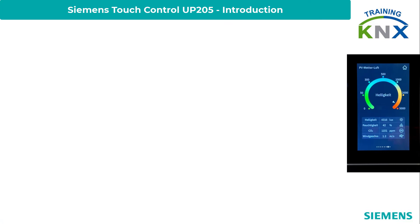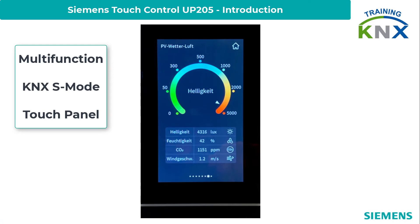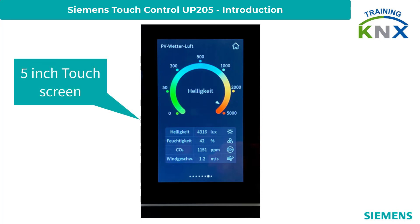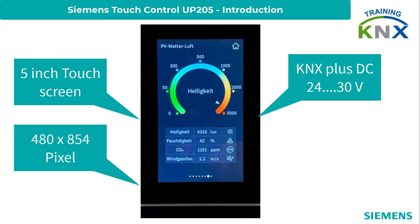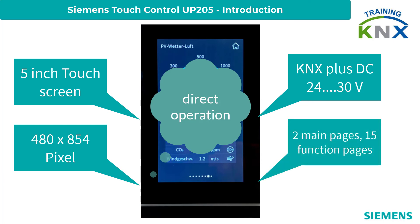The Touch Control TC5, referred to as TC5 in the following, is a multifunction KNX S-Mode touch panel for display, operation, and control. The device has a capacitive color touch screen of 5 inches with a resolution of 480 by 854 pixels. It is supplied via KNX together with an auxiliary voltage of 24 to 30 volt DC, and is operated directly via the touch screen.